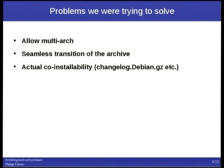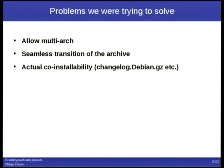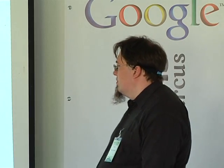We were basically just trying to solve allowing multi-arch and doing a seamless transition of the archive while doing that. Allowing multi-arch of course meant solving a lot of problems for actual co-installability — for example, timestamps that gzip inserted into the changelog debian.gz so those two files would be different, which per our rather strict definition meant dpkg wouldn't allow co-installation. There was a lot of really great work that went into making this possible.